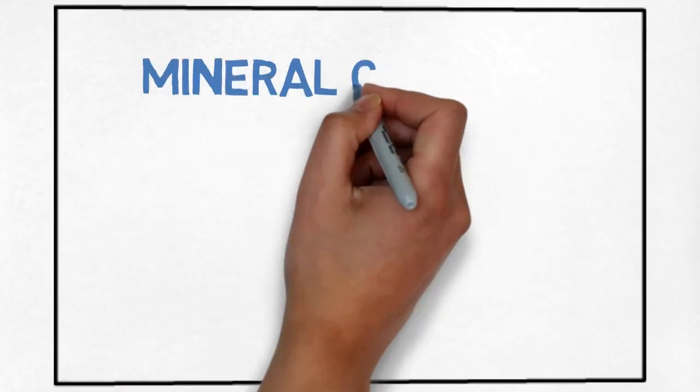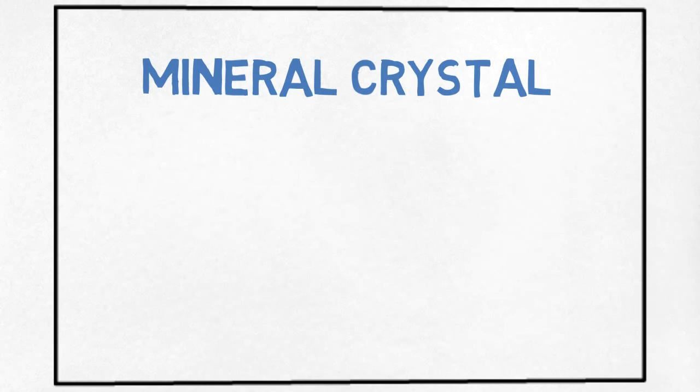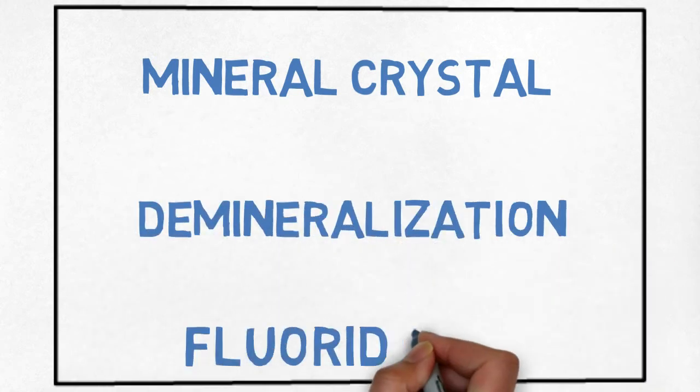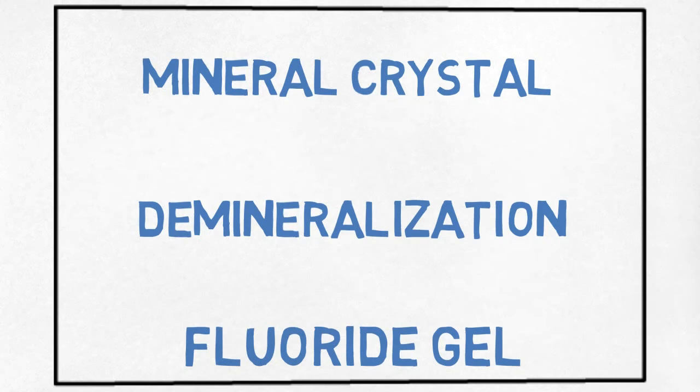Enamel is made up of closely packed mineral crystals. Every day minerals are lost and gained inside the enamel crystal. This is called demineralization. Demineralization is caused by acids produced due to the reaction of carbohydrates and bacteria. This can be prevented with the use of fluoride gels.